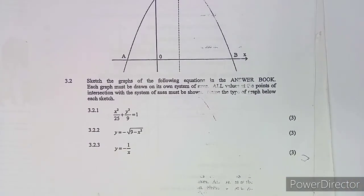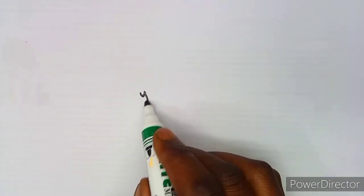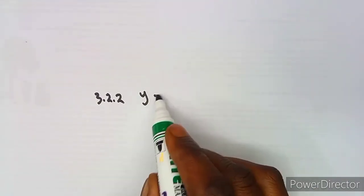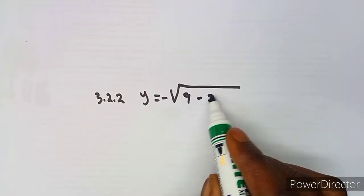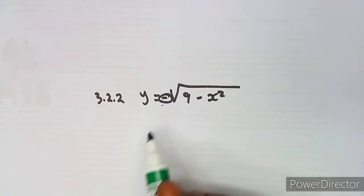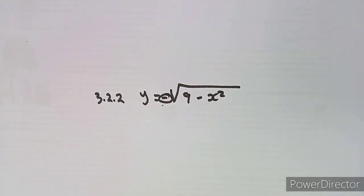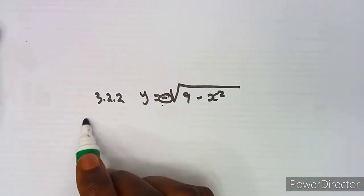The next equation is y = -√(9 - x²). This graph is limited to negative values of y only — y is always negative, not positive. So we focus on what intercepts we can find.